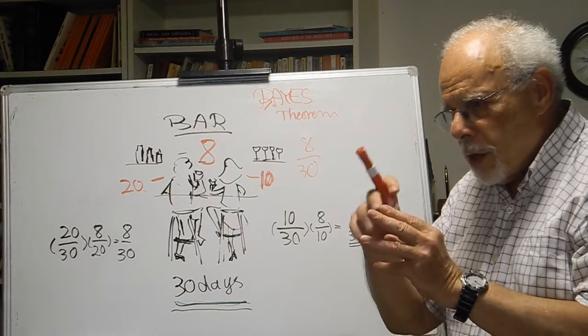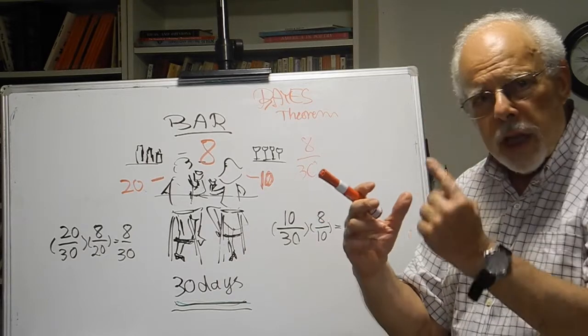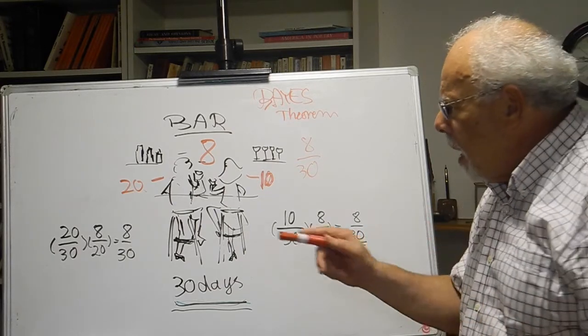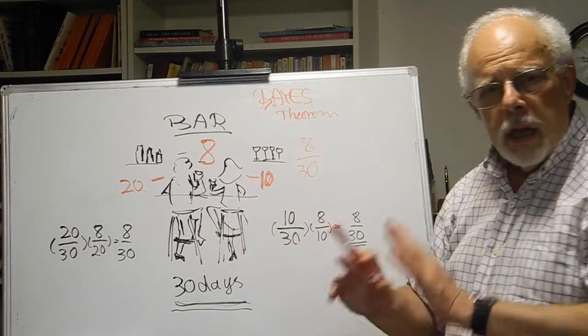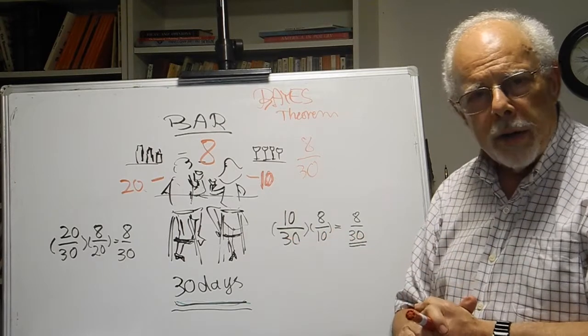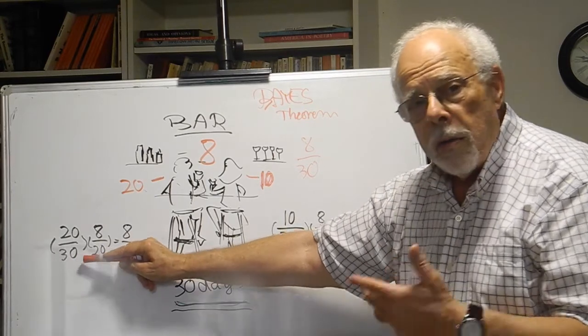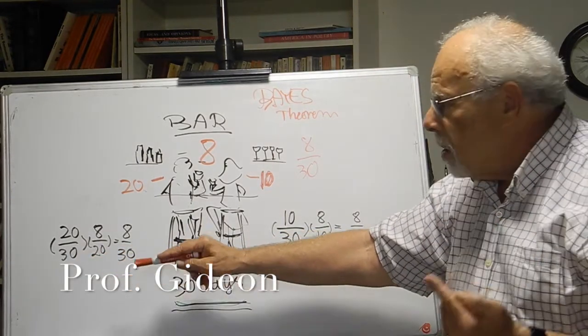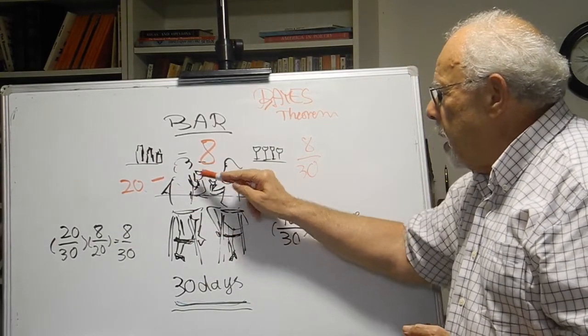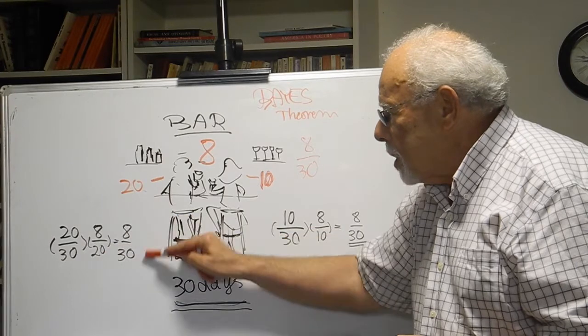But as much as we started with Alice and ask ourselves, if she is there, what's the chance that Bob is in the bar? We can do it the other way around. We can ask ourselves, what is the chance that Bob is in the bar? And the answer is 20 to 30. And now, each day that he is in the bar, what's the chance that Alice would be there too? Well, out of the 20 days that he was, they were together 8 times, so it's 8 to 20. The result is the same.